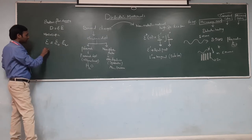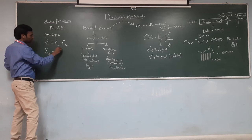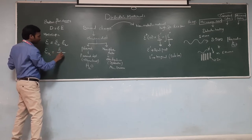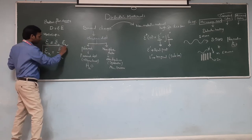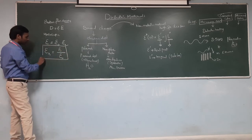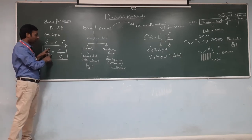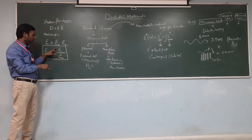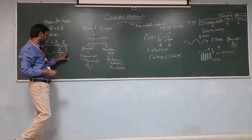The dielectric constant equals the permittivity of the medium divided by the permittivity of free space. This is called the dielectric constant or relative permittivity — it is the ratio of permittivity of the medium divided by permittivity of free space.